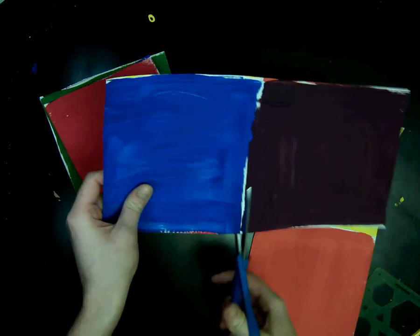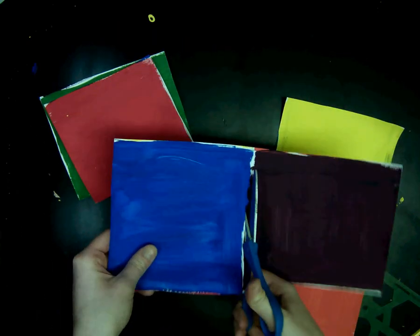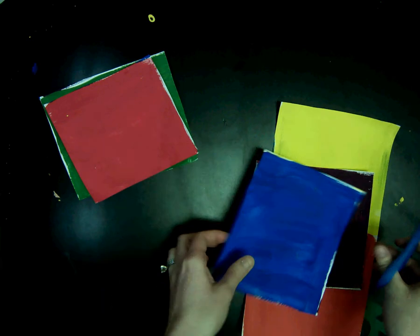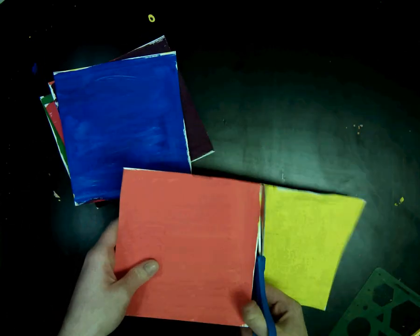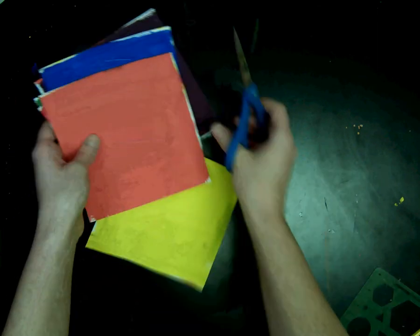Make sure at your table you are putting them in a stack and keeping track of them so you don't get them mixed with the person next to you. Go ahead and cut all six squares.